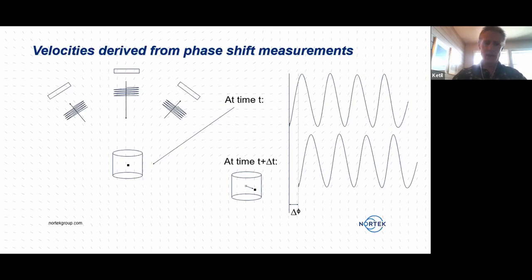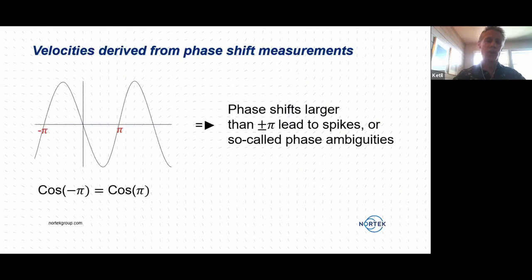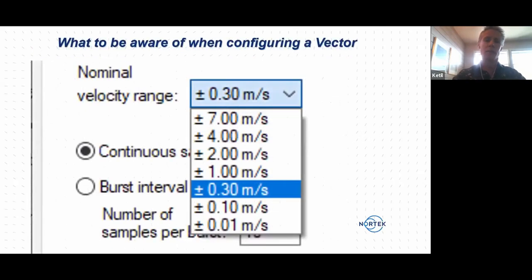The challenge with this is that when you measure phase, you have the problem that cosine to minus pi is the same as cosine to pi. In other words, we are not able to measure phase shifts that are larger than plus minus pi. When they become bigger than that, this leads to spikes in the data or so-called phase ambiguities. So we need to know something about the medium that we measure. We need to know something about the velocities that we are going to measure. And this is why the vector has the capability or the possibility when you set it up to select a certain velocity range.